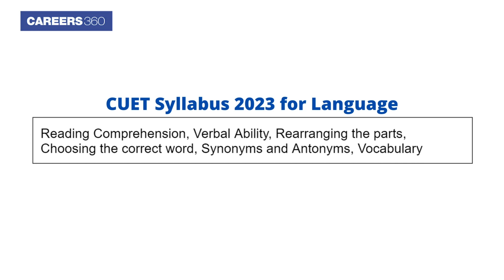CUET 2023 syllabus for language includes: reading comprehension, verbal ability, rearranging the parts, choosing the correct word, synonyms and antonyms, and vocabulary.